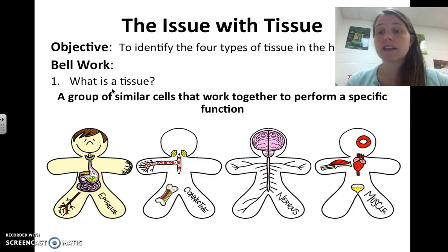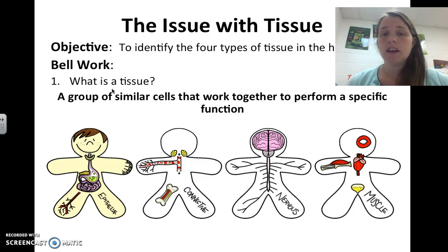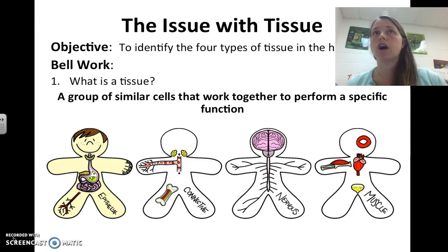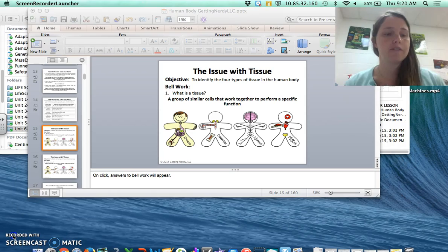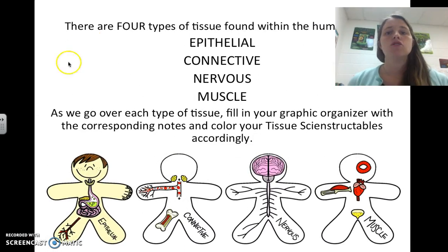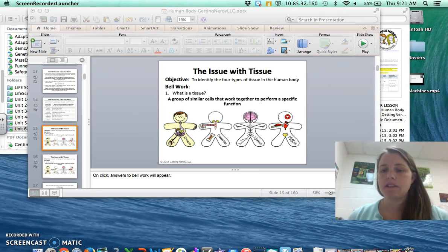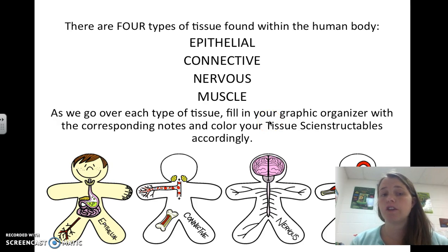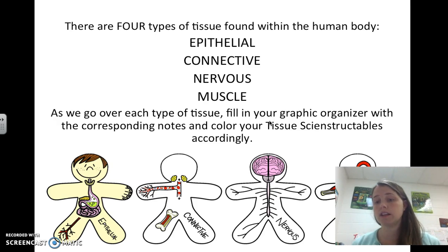For example, your skin cells are different than your brain cells, your brain cells are different than your heart cells, your heart cells are different than your lung cells. Each different type of organ is made of specific types of tissues, and those tissues work together to form the overall structure the body is made up of. There are four types of tissue found in the human body: epithelial tissue, connective tissue, nervous tissue, and muscle tissue. As we go over each type, you'll fill in your graphic organizer and color your tissue science structibles accordingly.